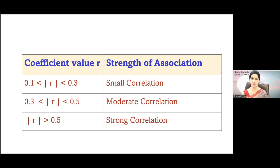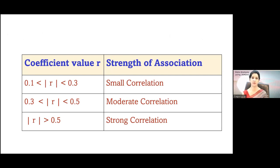Regarding the strength of association, we categorize it into three categories. When the value of R is up to 0.3, we call it a small correlation. When the value of R is more than 0.5, we call it a strong correlation. So you can remember: anything more than 0.5 is strong and anything less than 0.3 is small correlation.